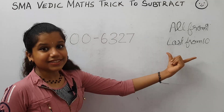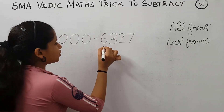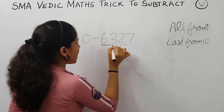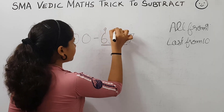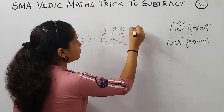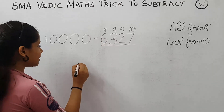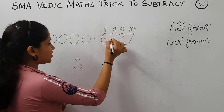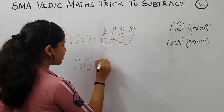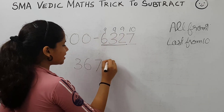So we can apply the rule: all from 9 and last from 10. These digits are to be subtracted from 9 and the last digit from 10. 9 minus 6 is 3, 9 minus 3 is 6, 9 minus 2 is 7, and 10 minus 7 is 3. The answer is 3,673.